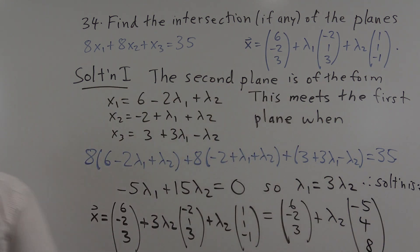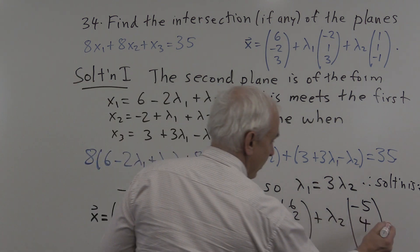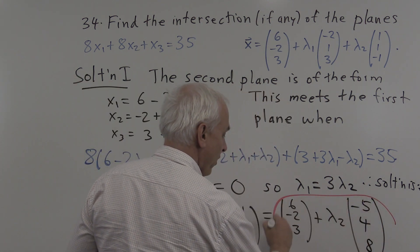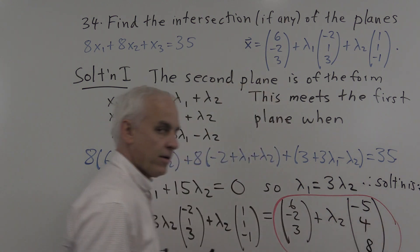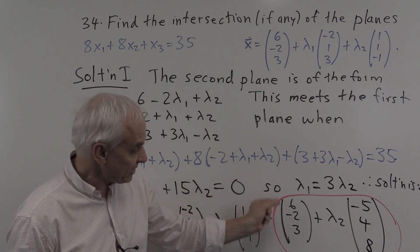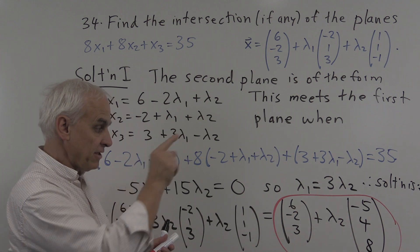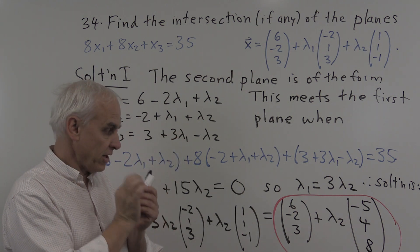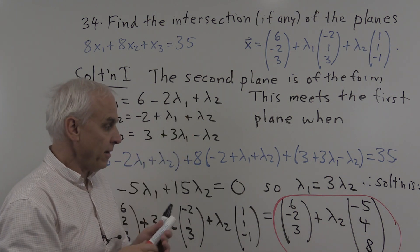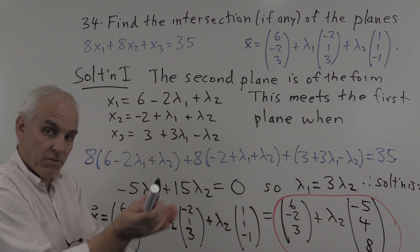So there is a vector equation for the intersection of these two planes. We see that it's a line that passes through the point 6 minus 2, 3, which has a single direction vector minus 5, 4, 8. So we start at 6 minus 2, 3 and we can go in any multiple of this vector. That's where these two planes are going to meet.